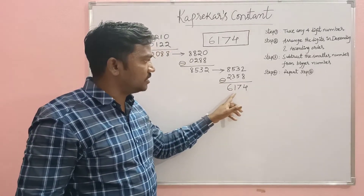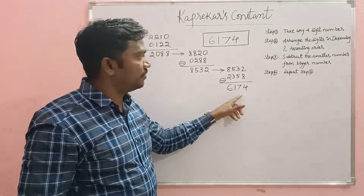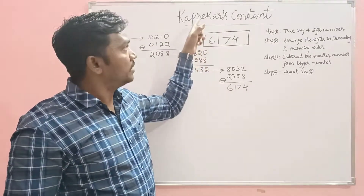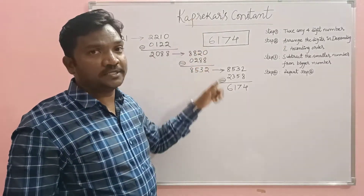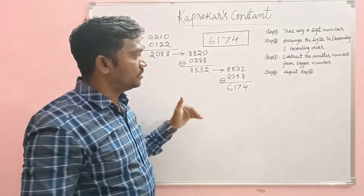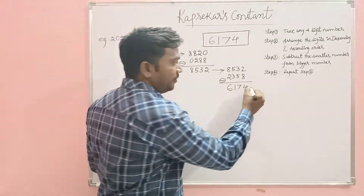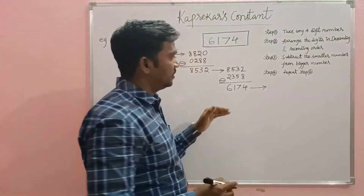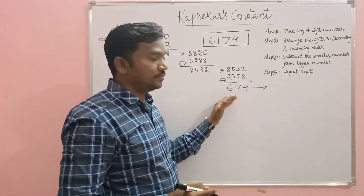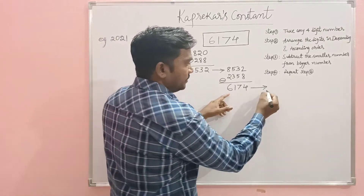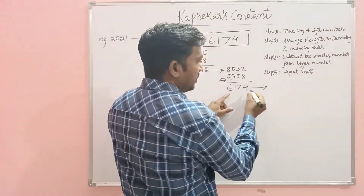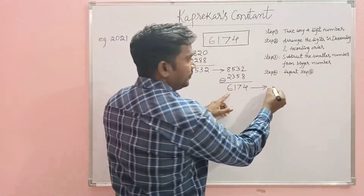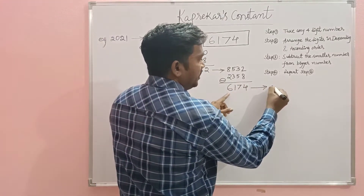The result is 6174. If you observe, 6174 is Kaprekar's Constant. If you continue the process, let us see what we get — arrange the digits in descending order.